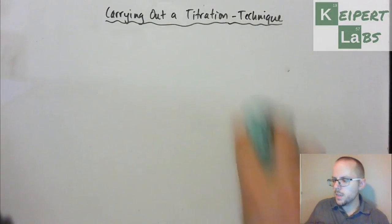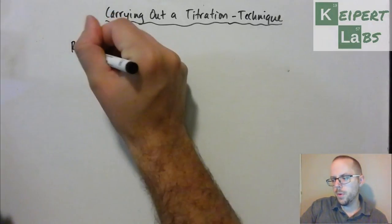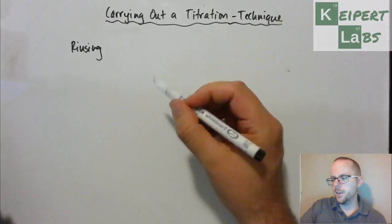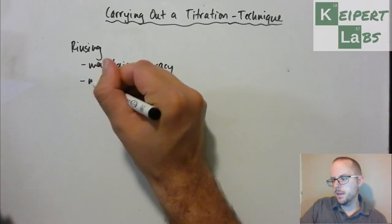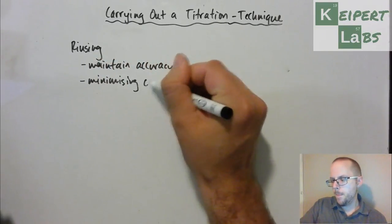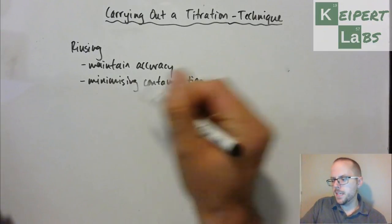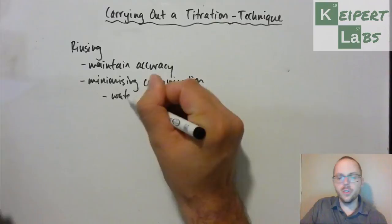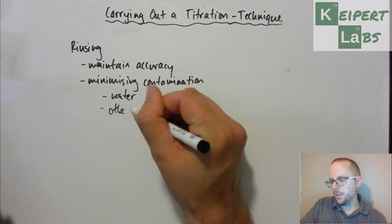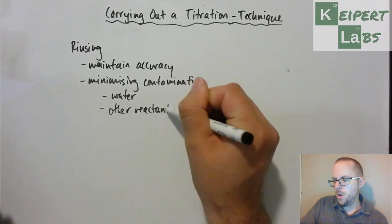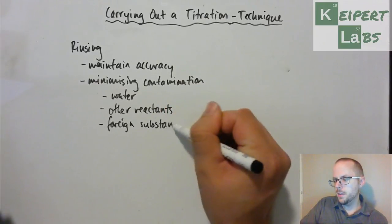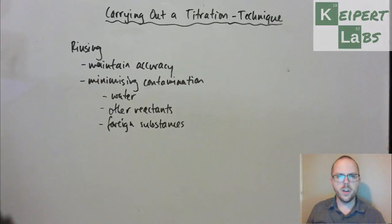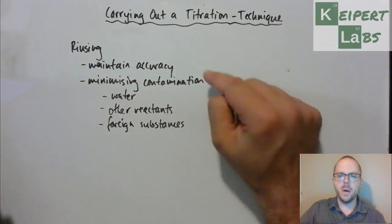So basically rinsing, or the prep work, is really important. It helps to maintain that accuracy, and it does that by minimizing contamination. That contamination might be water diluting our solution, or it might be other reactants, or it might even be foreign substances. Something that is totally unrelated, that's not supposed to be there, that's going to influence our result. So we're going to use good rinsing technique so that we can be really accurate because we're minimizing our contamination.